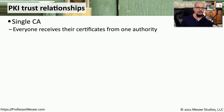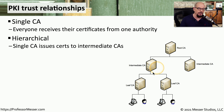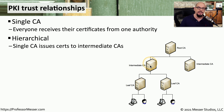If you're just starting out with a certificate authority, or building one out in a lab, it may only be necessary to have one single certificate authority in your organization. There are obviously some security concerns associated with that, but if you're using it on a limited basis, that may be all you need. It's probably more common for organizations to create a hierarchical structure with intermediate CAs and leaf CAs to limit the scope of any compromise. Users and devices receive certificates from a leaf CA, which was created from an intermediate CA, which was in turn created from a root CA. If a leaf CA is compromised, you would only need to replace the certificates associated with that single leaf CA.